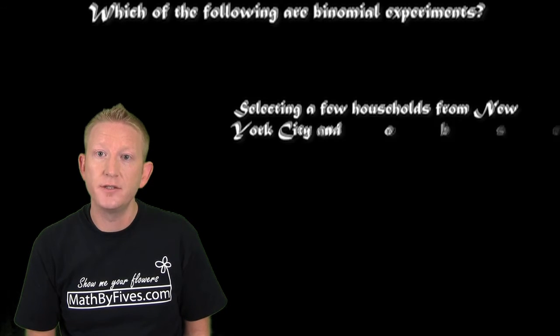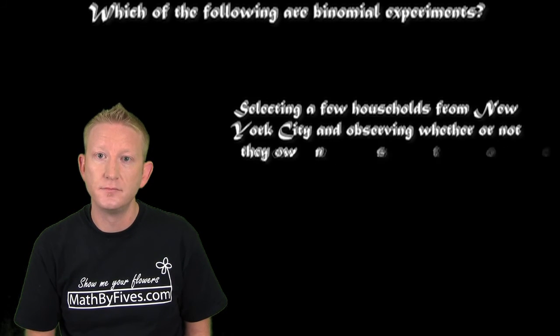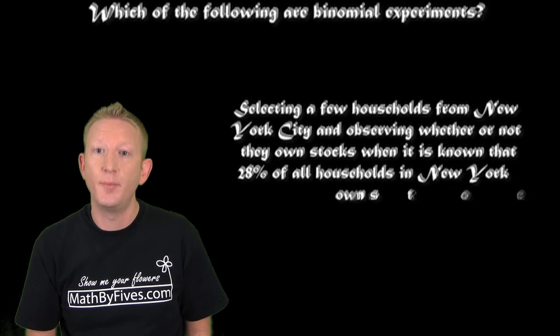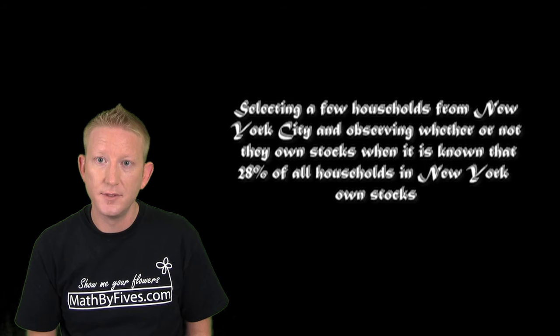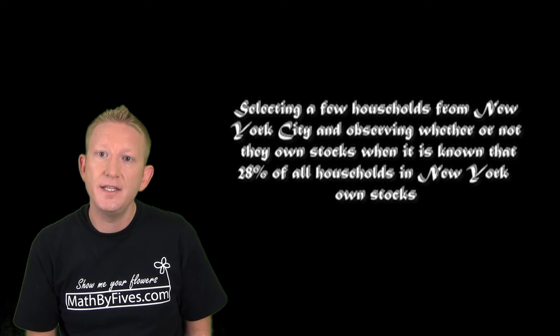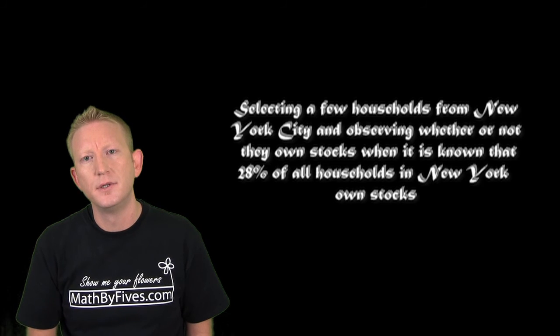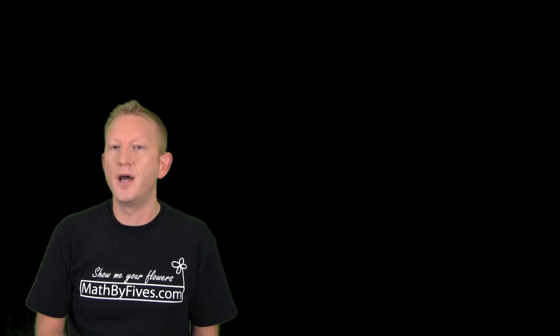Does the probability change from trial to trial? No. Why? Because it's known that 28% of the population own stock. That's the probability of success. Next, are they independent of each other? I don't see why not. Whether or not you own stocks doesn't change whether or not your neighbor owns stocks. So independent, satisfies all four, binomial experiment.